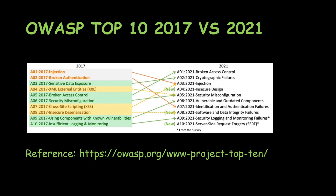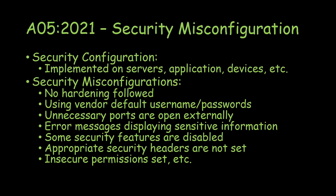We can see that A04 XML External Entities and A06 Security Misconfiguration from 2017 are now merged into A05 Security Misconfiguration in 2021. So XML External Entity is no longer a separate risk — it has been merged into Security Misconfiguration. In order to understand what security misconfiguration is, we need to first understand what security configuration means.